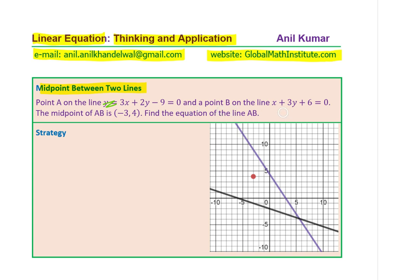is on the line x plus 3y plus 6 equals 0. The midpoint of AB is (-3, 4). Find the equation of line AB. That's the question for you.